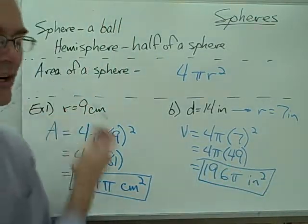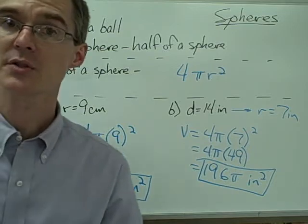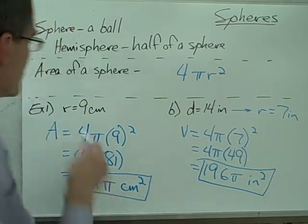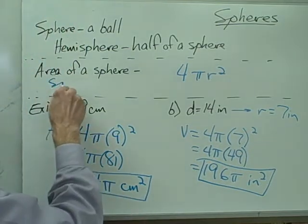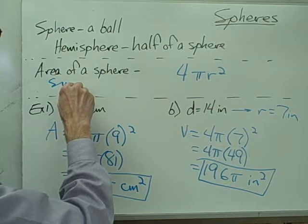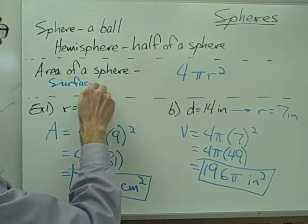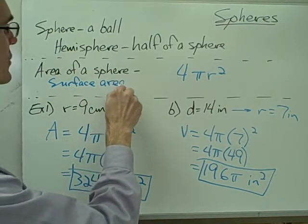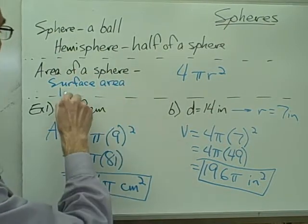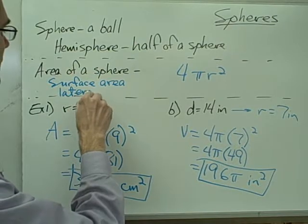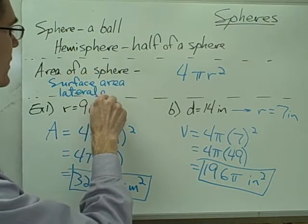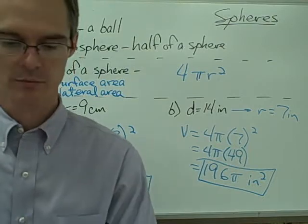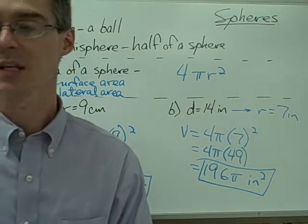By the way, the area of a sphere — you also sometimes hear that called the lateral area or the surface area. Either of those terms mean the same thing: surface area, lateral area, just other names for the same thing.